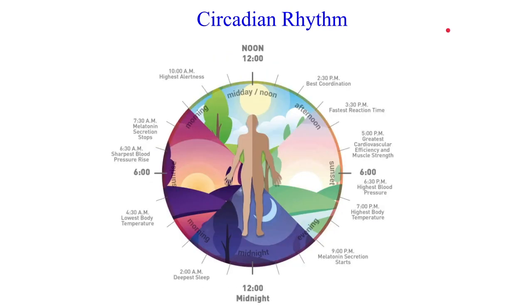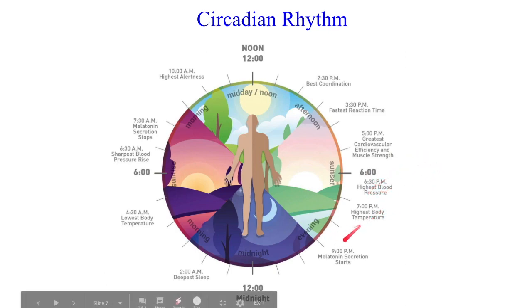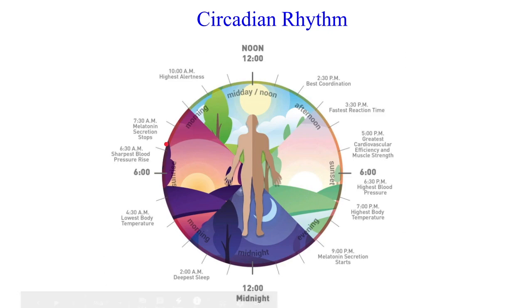If our circadian rhythm is effectively functioning, we'll have a match between our sleep-wake cycles and our desired sleep-wake patterns. We'll be alert during the day, and then in the evening the SCN will direct the pineal gland to start secreting melatonin based on those dark signals on the back of the eye, making us feel sleepy. We'll maintain a good period of sleep during the night, since humans have evolved to sleep at nighttime. In the morning, melatonin will be suppressed, light signals will rouse us from sleep, and we'll maintain a good level of alertness during the day.